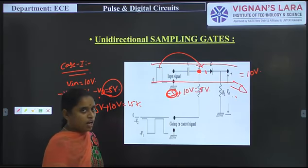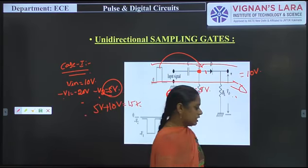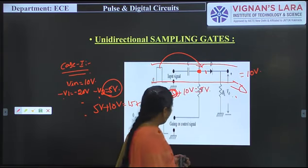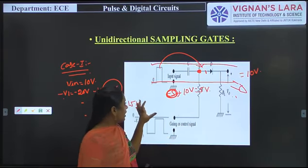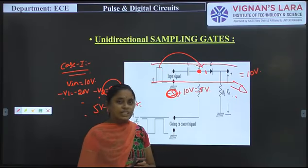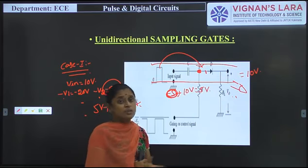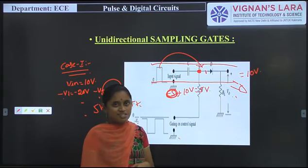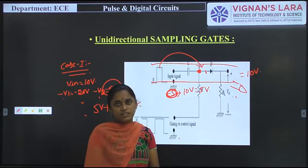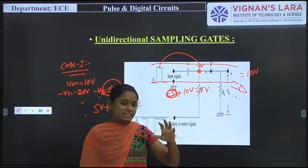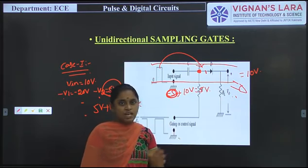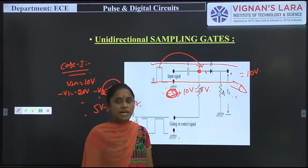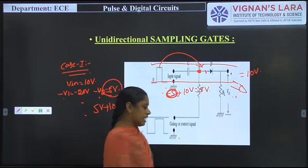When the output is combined with the control signal, this causes what is called a pedestal. The pedestal is the difference between the output signal during the gating time period and the actual input signal. In this case, the excess 5 volts is known as the pedestal. This is a major problem and major drawback of this type of unidirectional sampling gate — the input signal combines with the control signal.